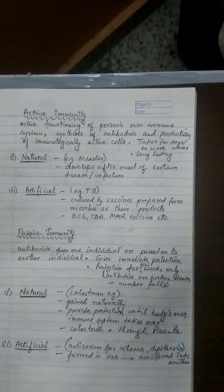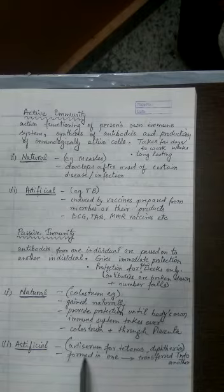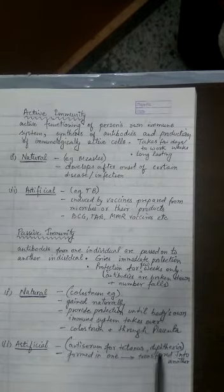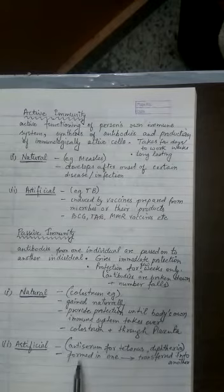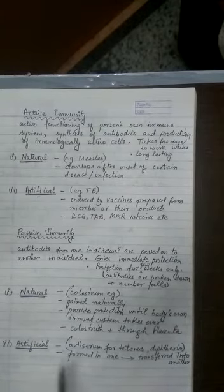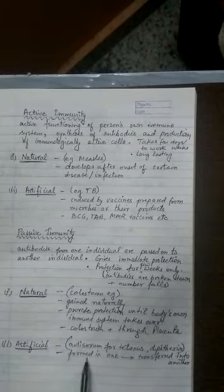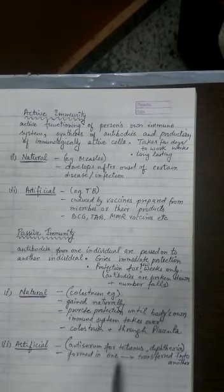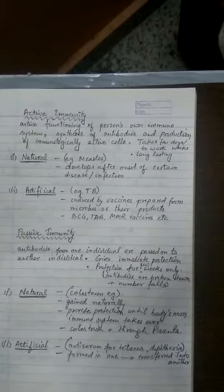And then artificially passive immunity is given in the cases of anti-sera for tetanus, anti-sera for diphtheria. And the reason is in this concept the antibodies are formed in one individual and it is transferred to the another individual.